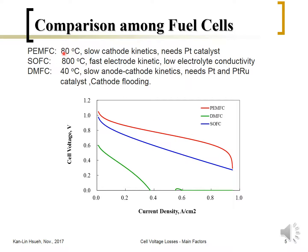For the SOFC, the activation overpotential is not significant because it operates at high temperature and typically does not need platinum — nickel is sufficient as a catalyst. However, because it uses a ceramic oxide electrolyte with very low ionic conductivity, it must operate at around 800°C to achieve acceptable electrolyte conductivity. So the majority of the loss is the IR drop, showing linear behavior. There is no mass transfer limiting current because at this temperature water has already evaporated and there is no liquid water inside the electrode, as long as sufficient fuel is supplied.